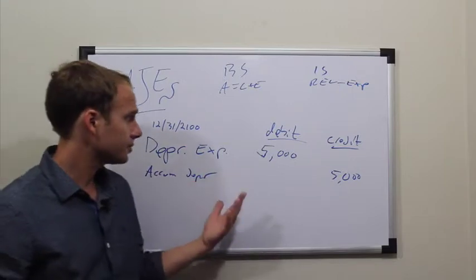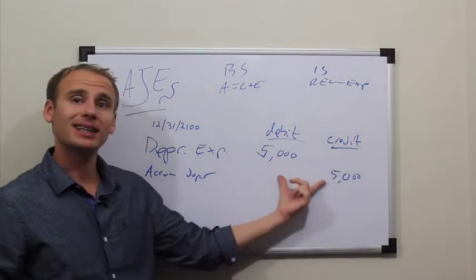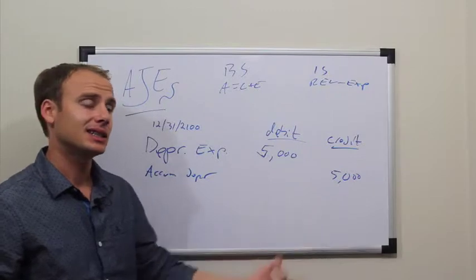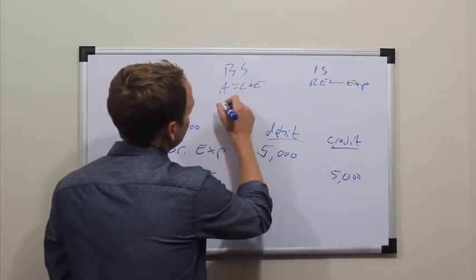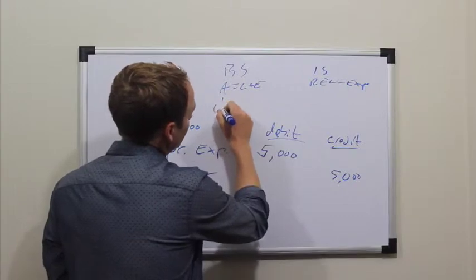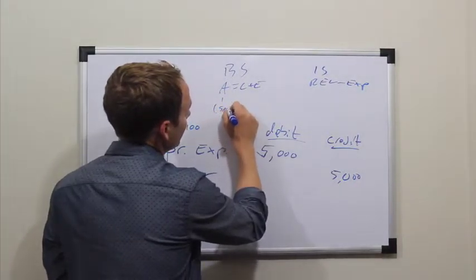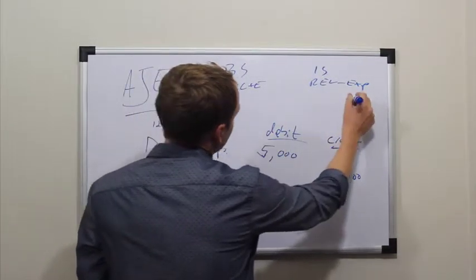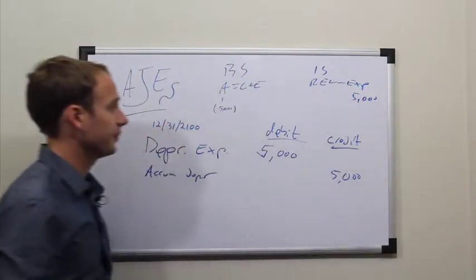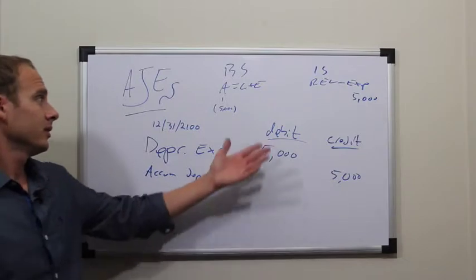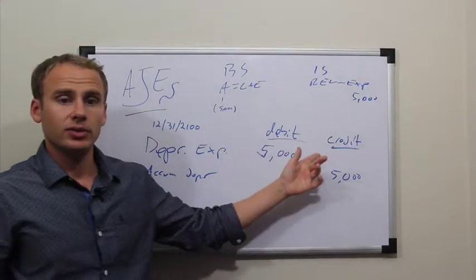So in this case, you're directly impacting the books and records, balance sheet, you're recording accumulated depreciation of $5,000, and you're having this expense of $5,000. Debits are always going to equal the credits.